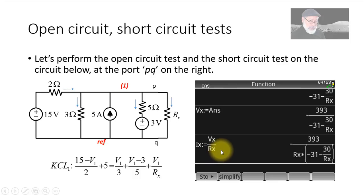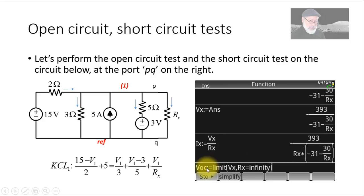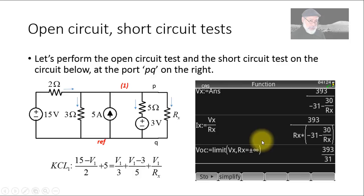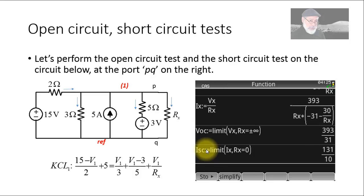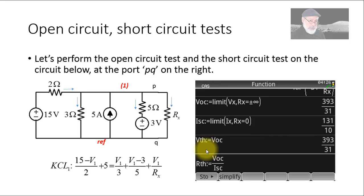No surprise — current Ix is also a function of Rx. Now we are ready. The open circuit voltage is the limit of Vx as Rx tends to infinity, and the short circuit current is the limit of Ix as Rx tends to zero. With those two values we compute Vth and Rth: Vth equals Voc directly, and Rth equals Voc divided by the short circuit current.